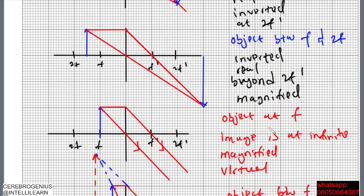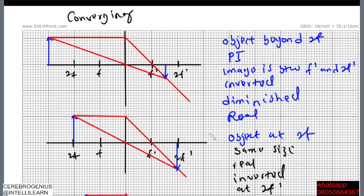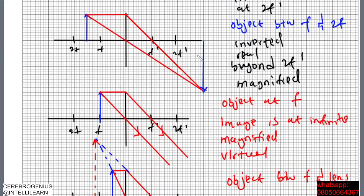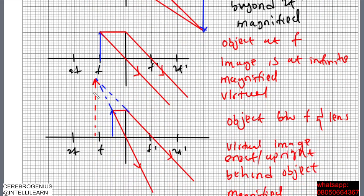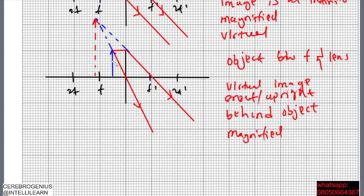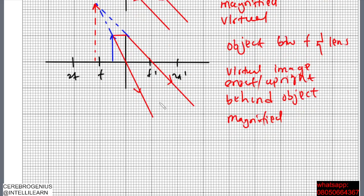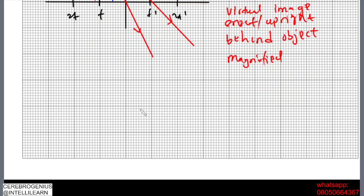This position gives the biggest image among all the cases we have considered. The image here is more than 20 squares tall, bigger than the previous magnified case. So this is where we can have the greatest magnification. That is how we draw ray diagrams for images formed by a convex lens.